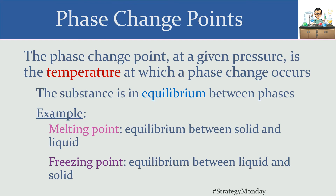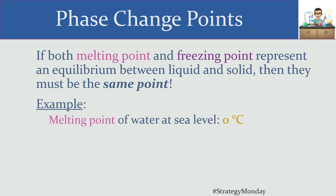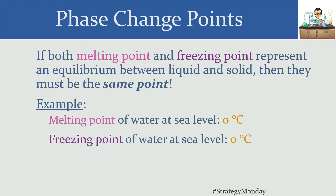If you take a look at those two statements — how we describe the melting point and how we describe the freezing point — you'll notice I said the same thing for both. In both instances, we're in equilibrium between the solid and the liquid phases. The conclusion we can logically draw is that the melting point and the freezing point represent the same exact point. You already know that intuitively: the melting point of water at sea level is zero degrees Celsius, and the freezing point of water at sea level is also zero degrees Celsius.